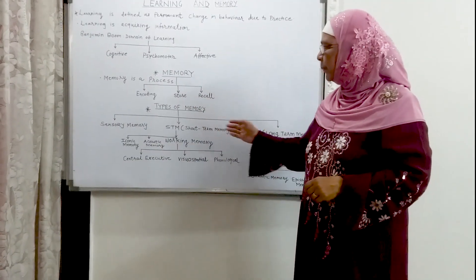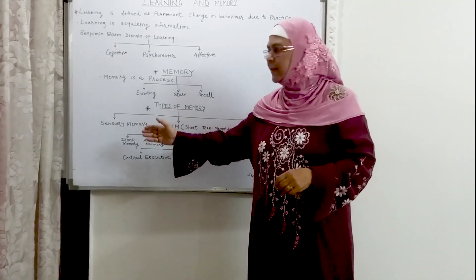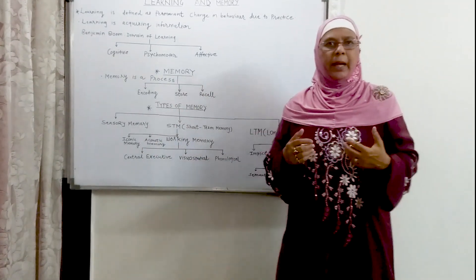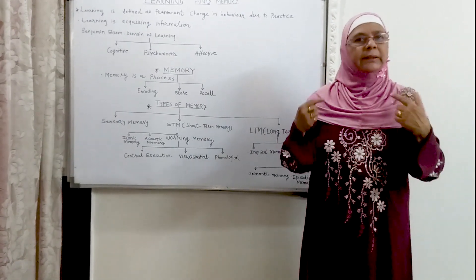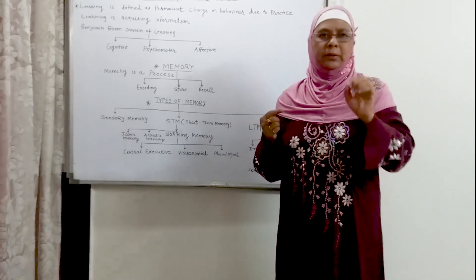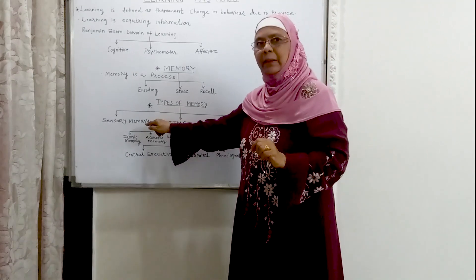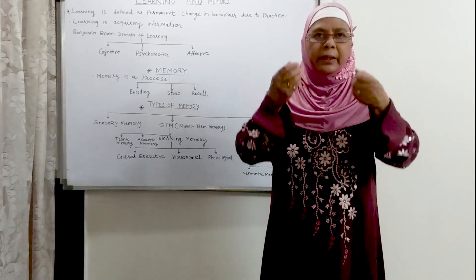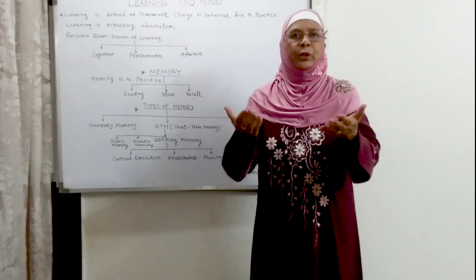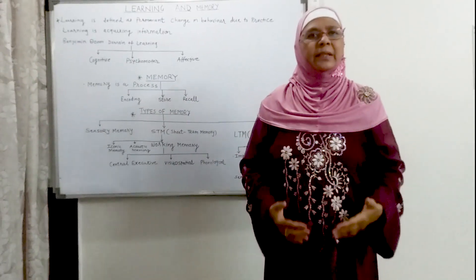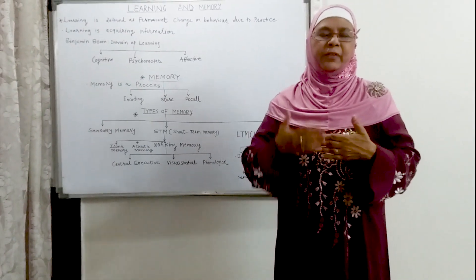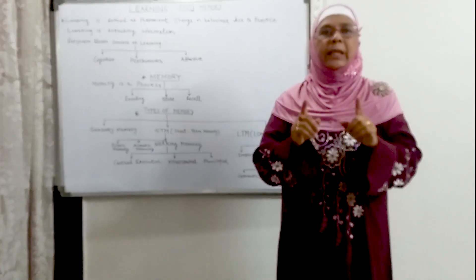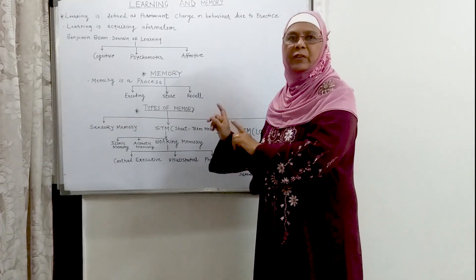Let us now look at the types of memory. We have three types of memories. First is sensory memory. The outside world information comes to us and strikes our sense organs — eye, ear, nose, tongue, skin. Here the information is held for about one second. If it is not important and not attended to, all that information is dropped, because new information in the next second is getting registered in the sense organs. Every second, the information is either deleted from storage, or if we attend to that information, only attended information will be processed further to the short-term memory.